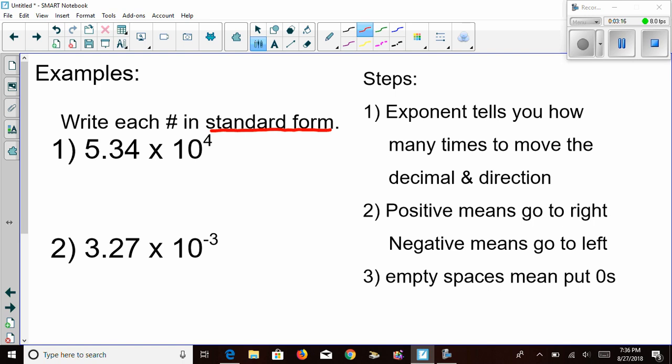First, the exponent tells you how many times to move the decimal and which direction. Two, positive means to go right. Negative means to go left. And three, any empty spaces mean you need to put a zero in it.